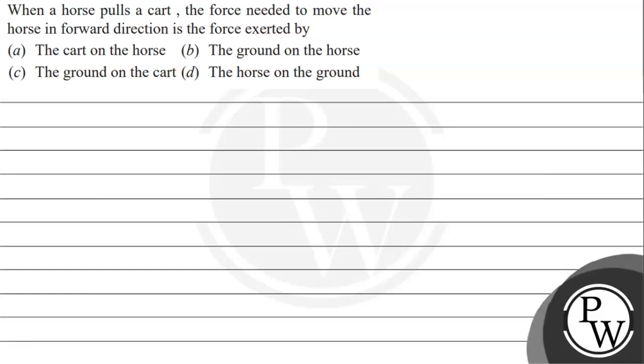Hello, let's read the question. When a horse pulls a cart, the force needed to move the horse in forward direction is the force exerted by: option A, the cart on the horse; option B, the ground on the horse; option C, the ground on the cart; option D, the horse on the ground.